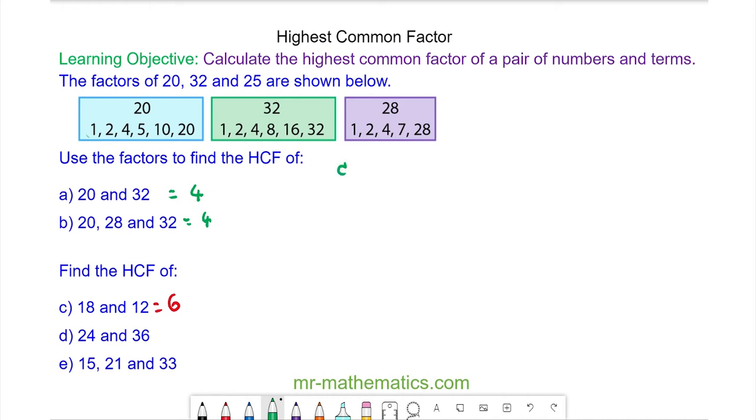So for question D, we will work out the factors of 24, which are 1 and 24, 2 and 12, 3 and 8 and 4 and 6. And for 36, 1 and 36, 2 and 18, 3 and 12, 4 and 9 and 6 multiplied by itself.